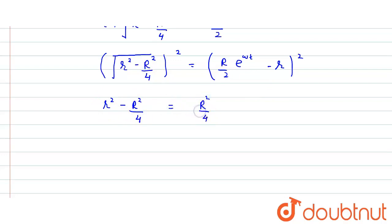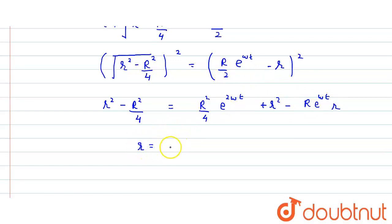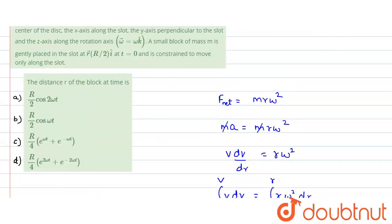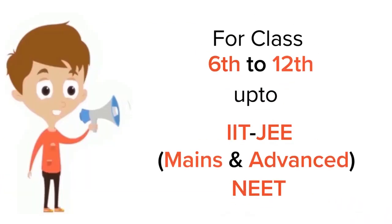After squaring: r² − R²/4 = (R²/4)e^(2ωt) − Rr·e^(ωt) + r². The r² terms cancel. Solving, the radial location turns out to be r = (R/4)(e^(ωt) + e^(−ωt)). Checking the options, the correct answer is option C: r = (R/4)(e^(ωt) + e^(−ωt)).